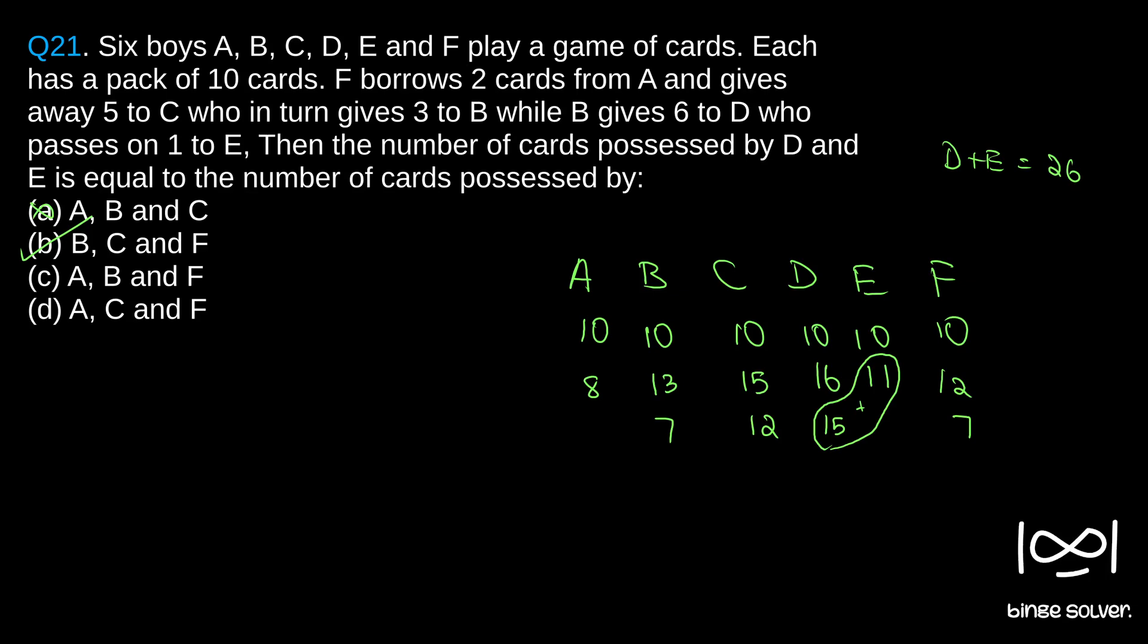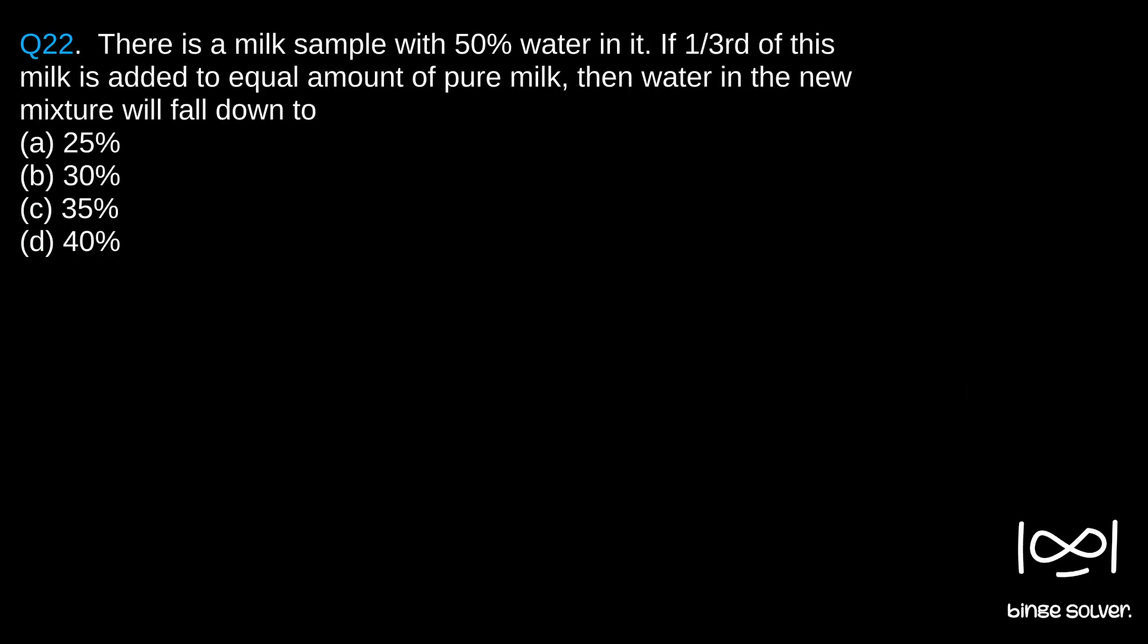Next question, question 22. There is a milk sample with 50% water in it. If one-third of this milk is added to equal amount of pure milk, then water in the new mixture will fall down to: a) 25%, b) 30%, c) 35%, d) 40%.